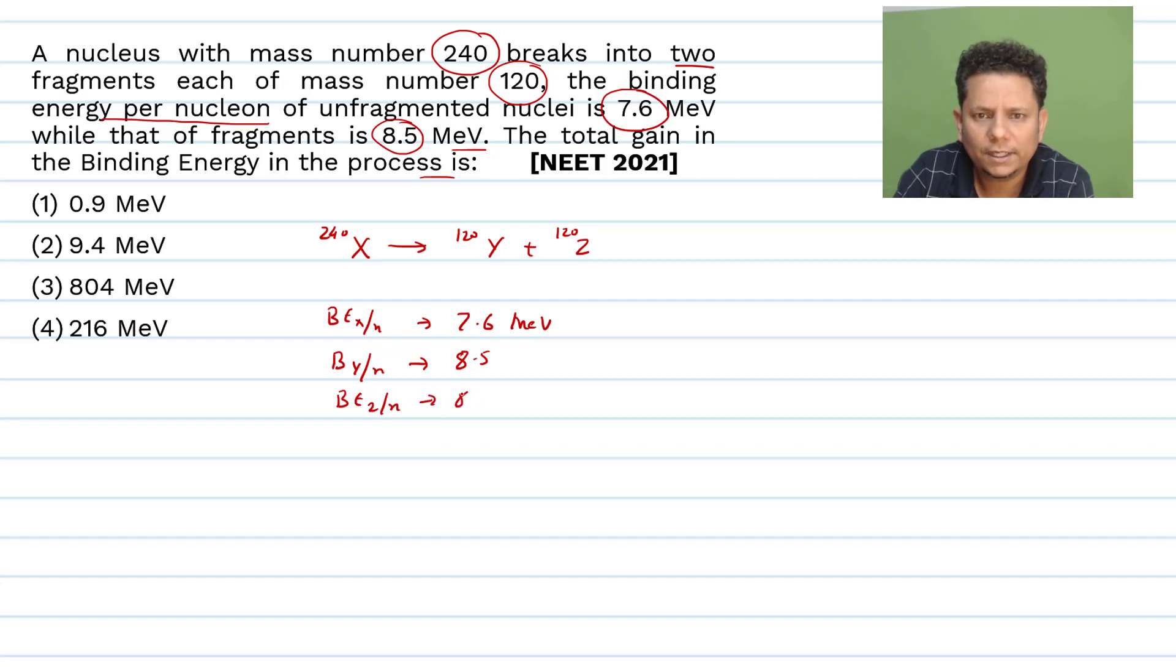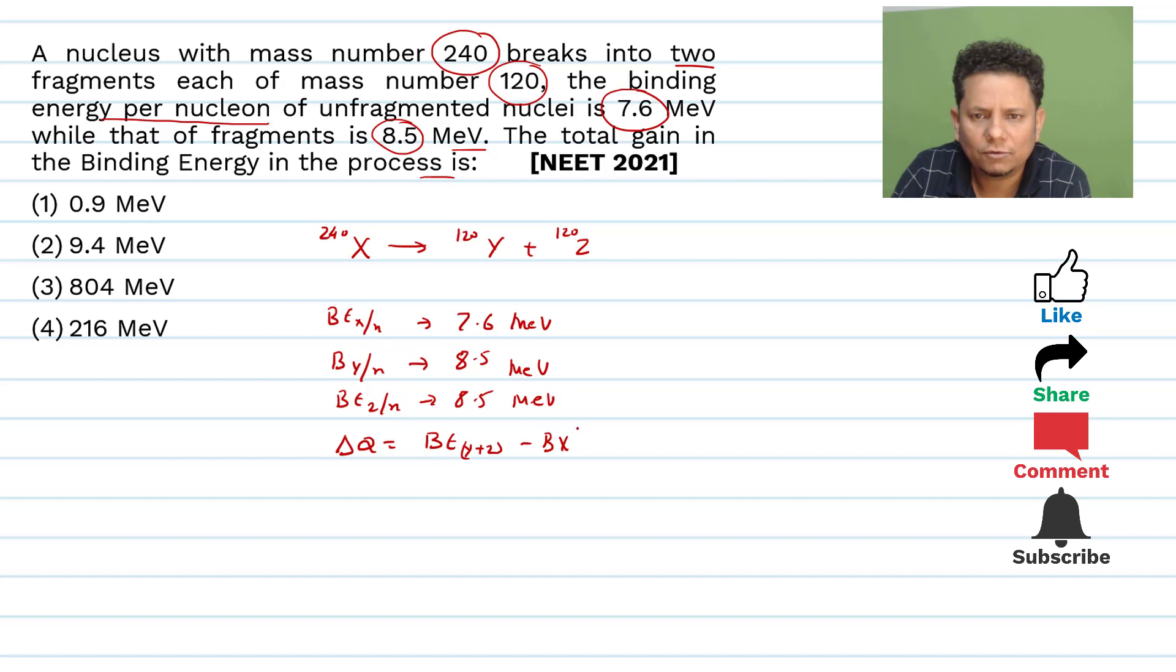We need to find the total gain. So delta Q can be written as total binding energy of Y plus Z minus binding energy of X.